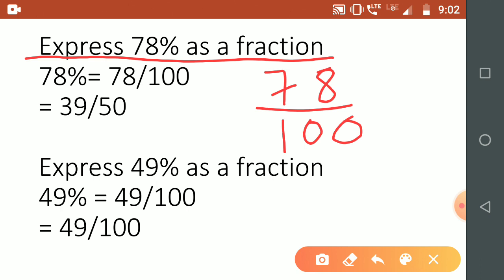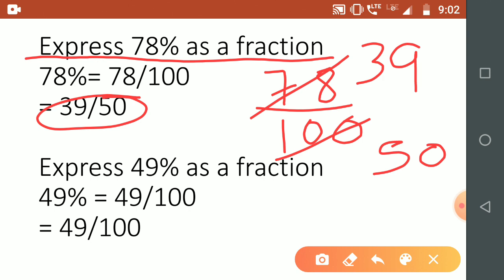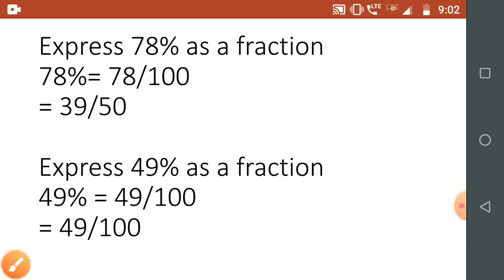We can reduce it by 2. So 2 times 39 is 78, and 2 times 50 is 100. So 39 upon 50 is the answer for 78%.